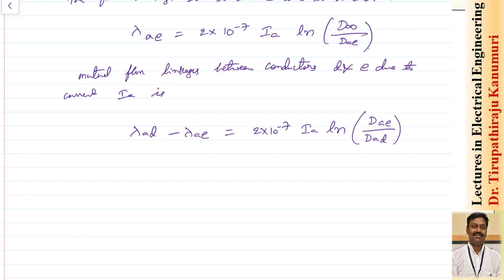From this we can calculate the mutual inductance M_A due to conductor A in loop DE, which equals the flux linkages divided by the current. I am providing the complete handwritten material in the description of this video as a Google Drive link — you can download it from there. Here, try to understand the concept clearly, and refer to the material for your exam.